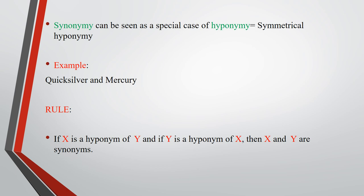Synonymy can be seen as a special case of hyponymy — in this case it is called symmetrical hyponymy. For example, 'quicksilver' and 'mercury' have the same meaning and refer to the same thing; they are hyponyms of each other. The rule states: if X is a hyponym of Y and Y is a hyponym of X, then X and Y are synonyms. So 'quicksilver' is a hyponym of 'mercury' and 'mercury' is a hyponym of 'quicksilver' — this is called symmetrical hyponymy.